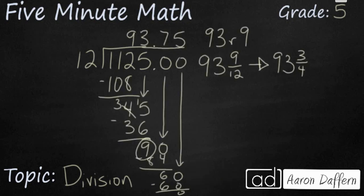If you take a look at the work here, the answer can be written several different ways. 12 goes into 1,125 93 times. And there is 9 left over. So you can write that as 93 R 9.